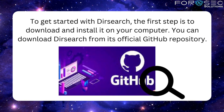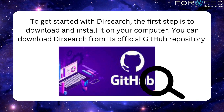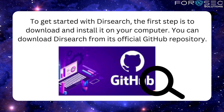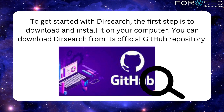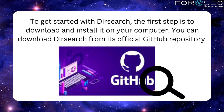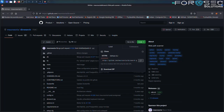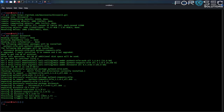To get started with DIRsearch, the first step is to download and install it on your computer. You can download DIRsearch from its official GitHub repository. You can copy the URL from here and run the command git clone for cloning DIRsearch. After completing the cloning, you can install it by using apt install dirsearch.